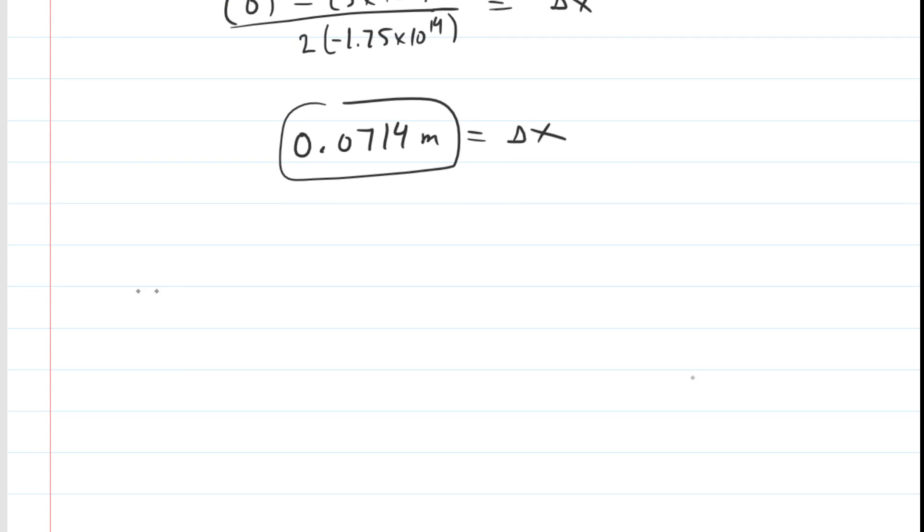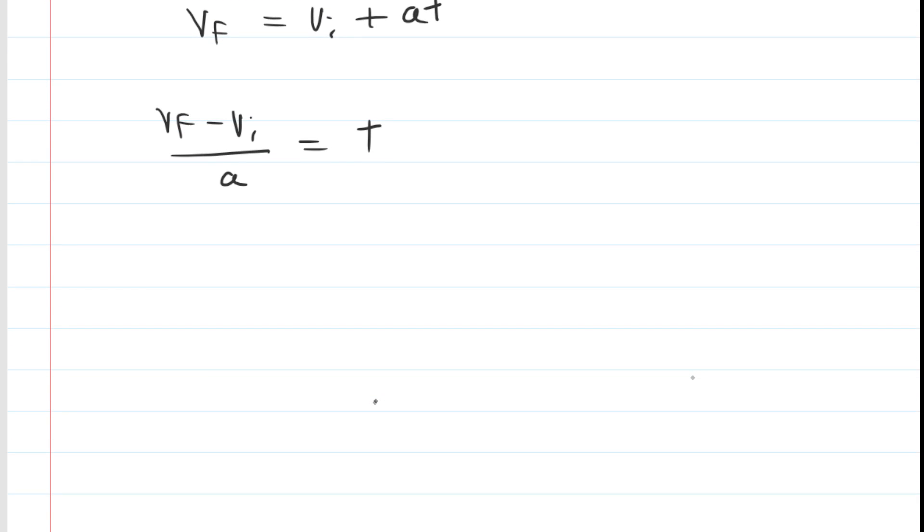Part B asks how much time is that going to take? Well, we can do that pretty easily because we know the following equation from kinematics. We can actually rearrange that for time by subtracting v initial from both sides and then dividing by the acceleration. We have all the values on the left side, so let's go ahead and plug them in. And when we simplify that, we get about 2.85×10⁻⁸ seconds. That's the correct answer to Part B.